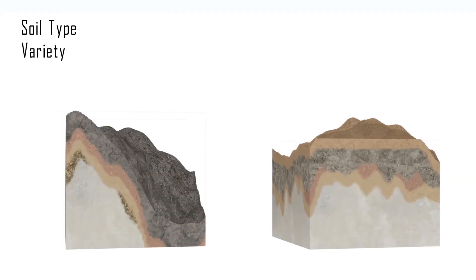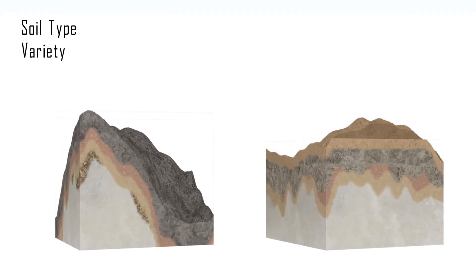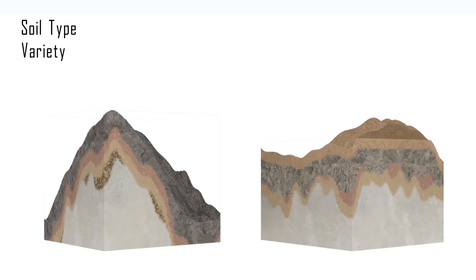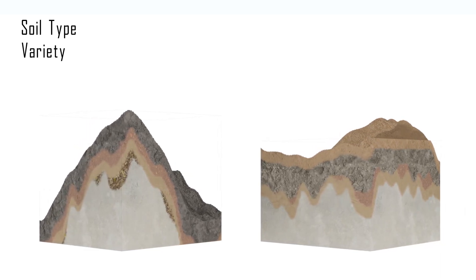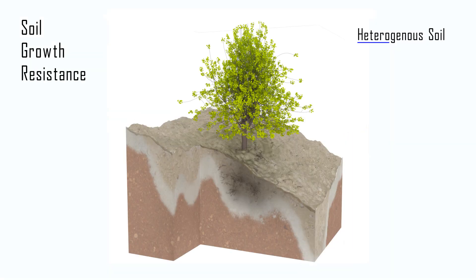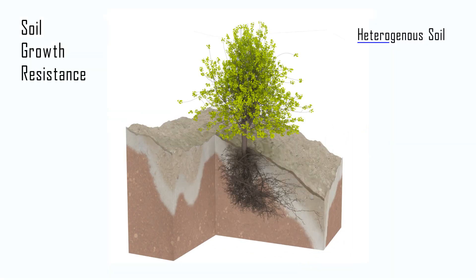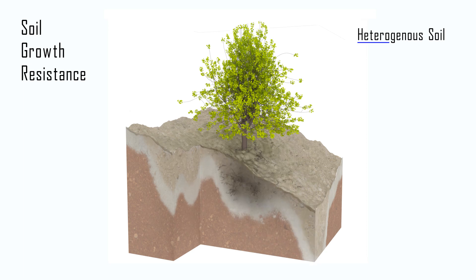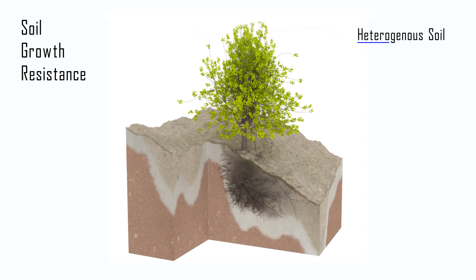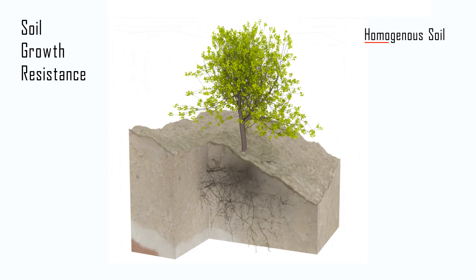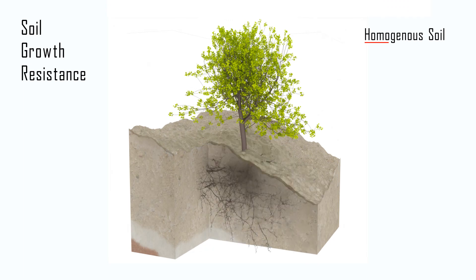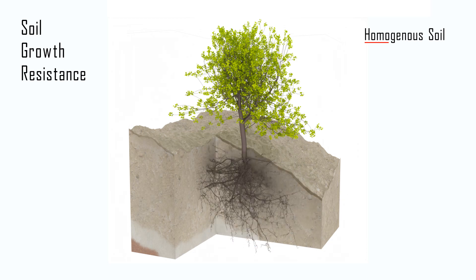Our soil model can represent soil types with different growth resistance properties for the roots, as indicated by the colors of the layers. This allows our plant models to interact with the surrounding soil in various ways. In layered soils where bottom layers have a high growth resistance, the branches will try to avoid growing into it, resulting in a symmetric root shape.